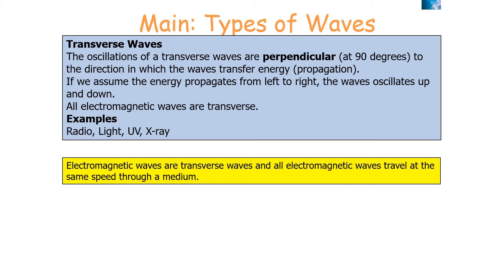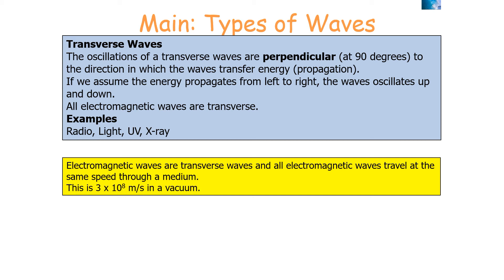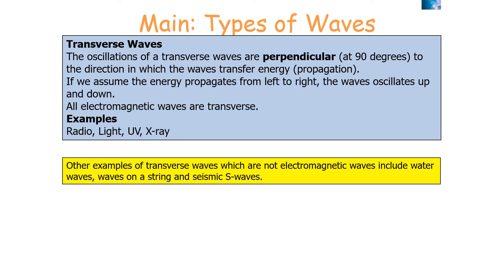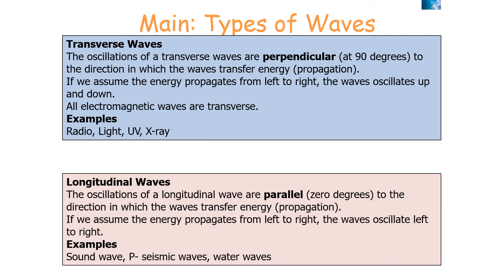All electromagnetic waves travel at the same speed through a medium — 3 × 10⁸ metres per second in a vacuum. They are produced by the oscillation of magnetic and electrical fields, or by the acceleration of a moving charge. Other transverse waves that are not electromagnetic include water waves, waves on a string, and seismic S-waves. Longitudinal waves are oscillations parallel to energy transfer; if energy propagates left to right, the waves also oscillate left to right. Examples include sound waves, seismic P-waves, and some water waves.